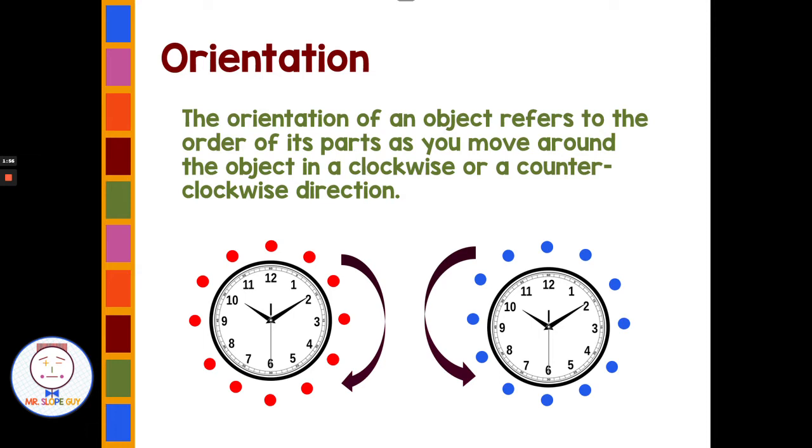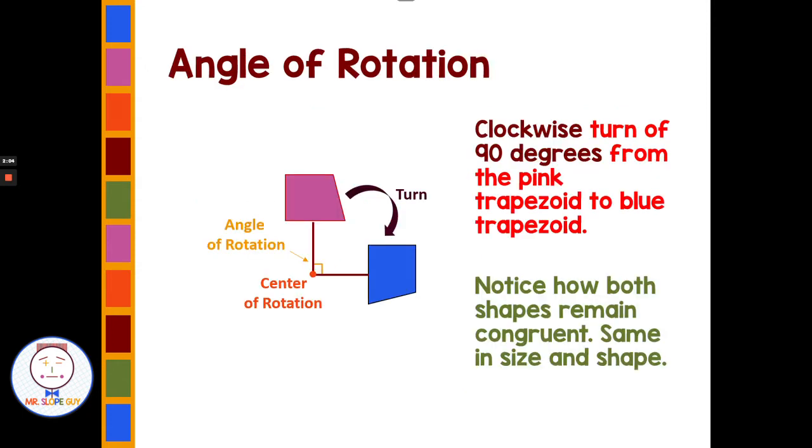The orientation refers to the order of the parts as you move around the object in a clockwise or counter-clockwise direction. Our angle of rotation is a clockwise turn of 90 degrees from the pink trapezoid to the blue trapezoid. Notice how both shapes remain congruent - same size and shape.